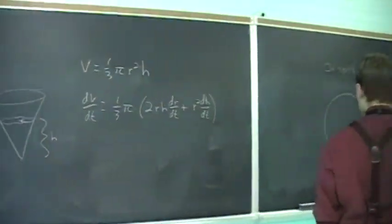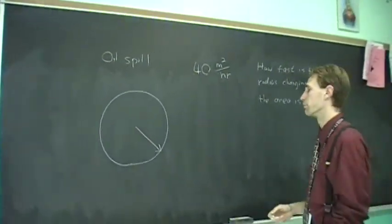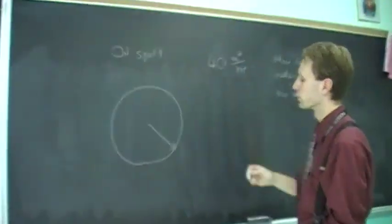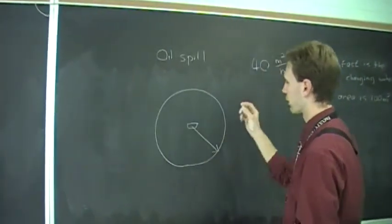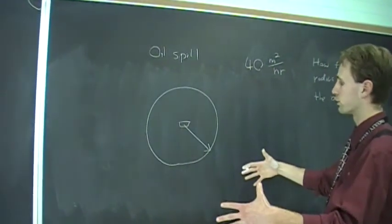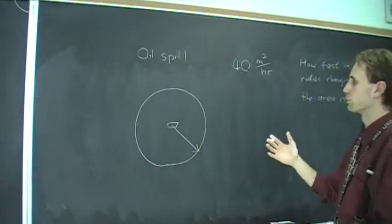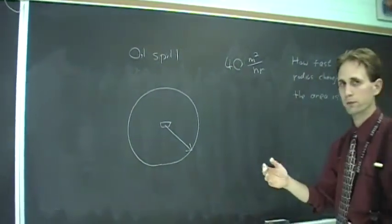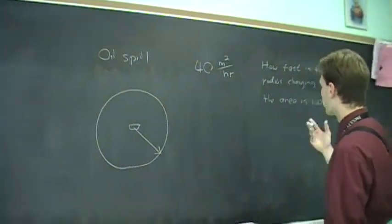So for the first related rates problem, it's the classic oil spill problem. There's an oil spill in the middle of the ocean, a tanker ruptures, and it spills out oil that expands in a circular pattern. We'll say that the area of the spill is increasing at a constant rate of 40 square meters per hour.